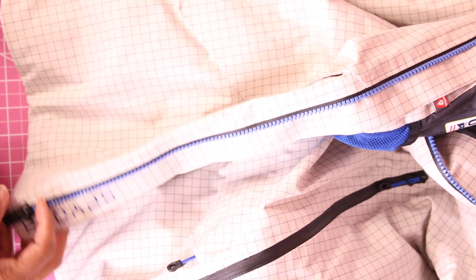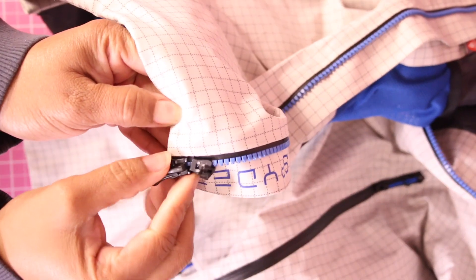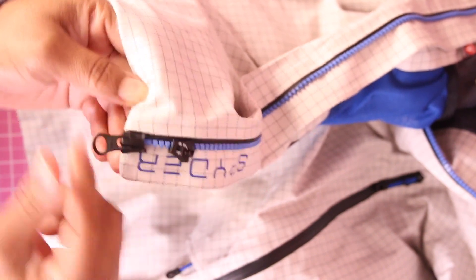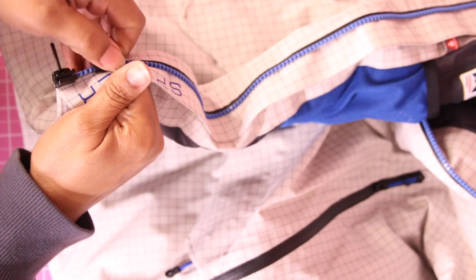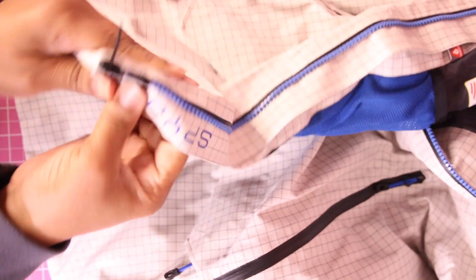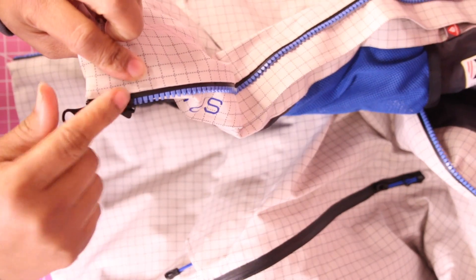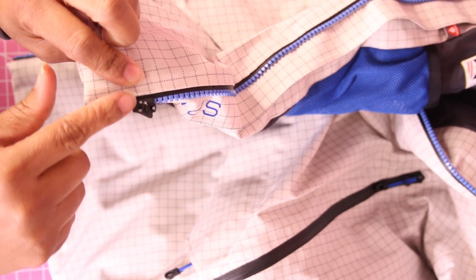Do you have a zipper that looks like this where your pull broke off of your slider? This is a double pull zipper, meaning it needs two pulls to zip up the zipper, but the pull on here is broken.